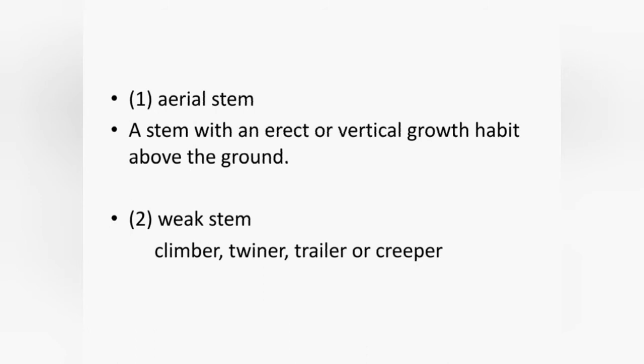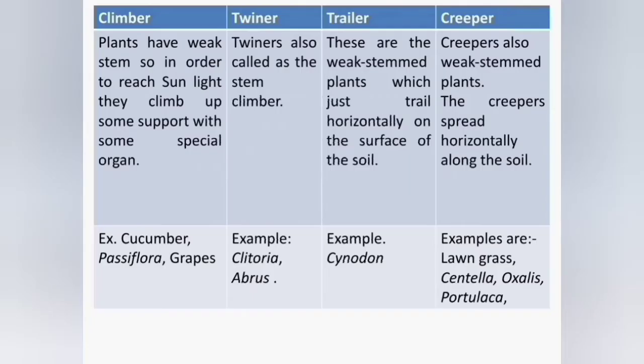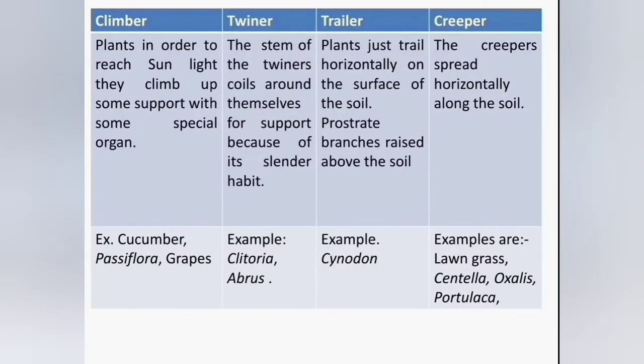The aerial stem means a stem with an erect or vertical growth habit above the ground level. The main types of modification of weak stem are climber, twiner, and trailer or creepers. Climbers are plants with a weak stem that, in order to reach sunlight, climb some support with special organs. For example, cucumber, Passiflora and grapes.